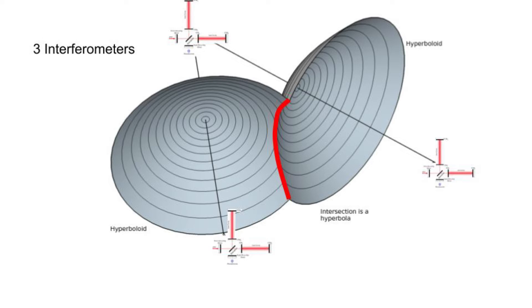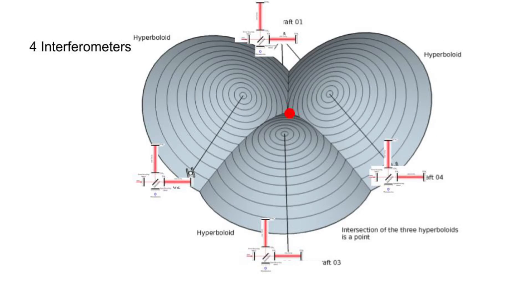If you have 3 interferometers, you can narrow the source position to be on a line of intersection between the two cones. And if you have 4 interferometers, the source must lie on a single point of intersection of 3 cones.